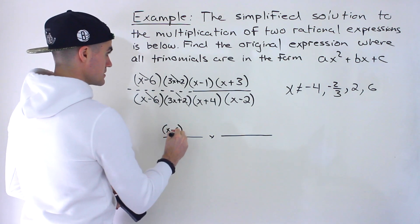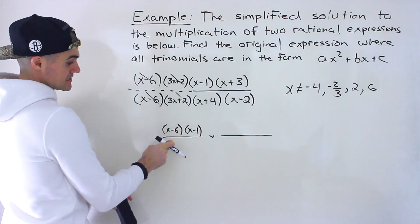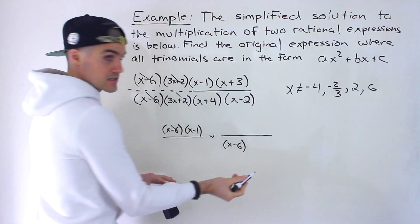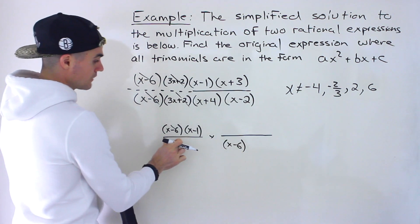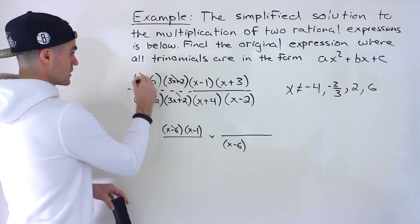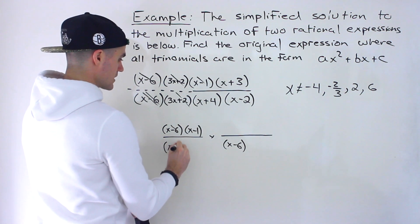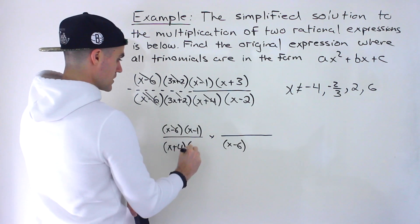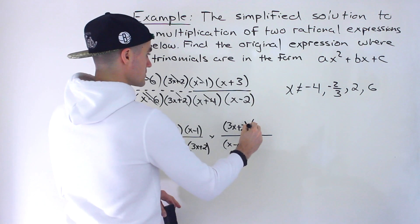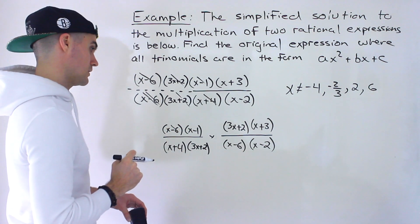Let's construct one specific solution. We'll place x minus 6 and x minus 1 in one part, with x plus 4 in the denominator there. Then 3x plus 2 in the denominator and 3x plus 2 in the numerator of the second fraction so they cancel, along with x plus 3 and x minus 2. Again, you could have mixed and matched these in whichever way you wanted — this is just the way I went about it.